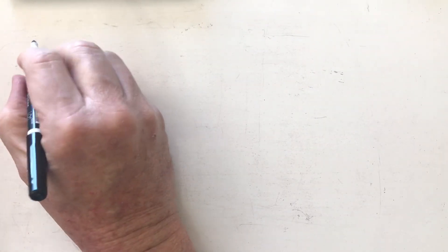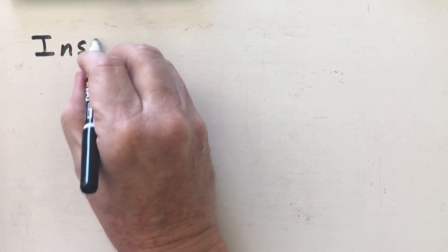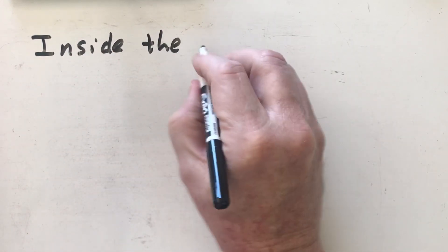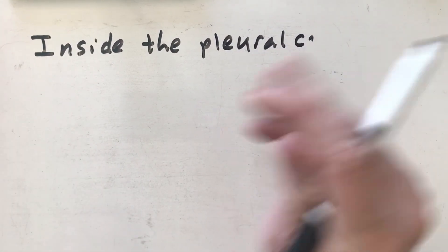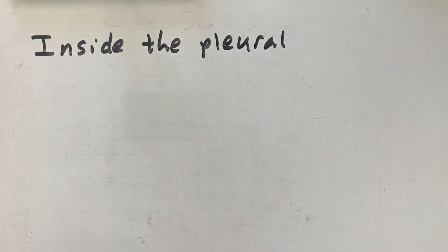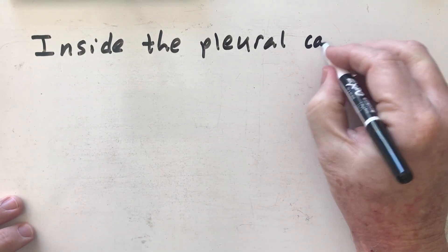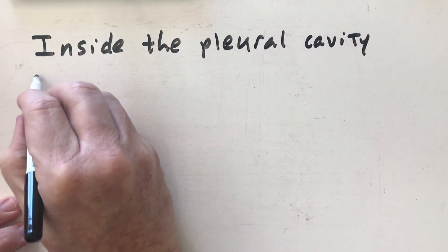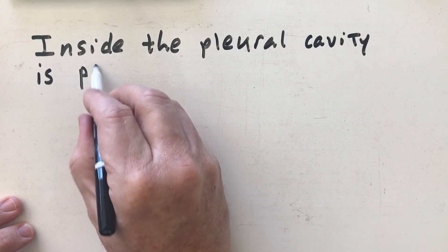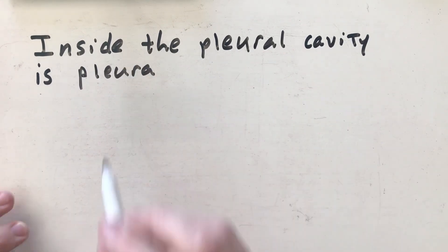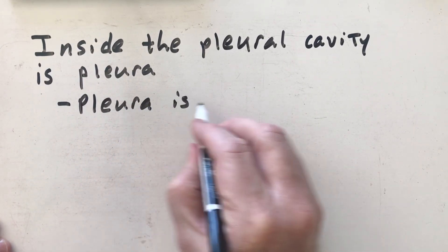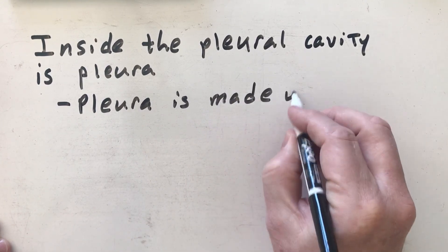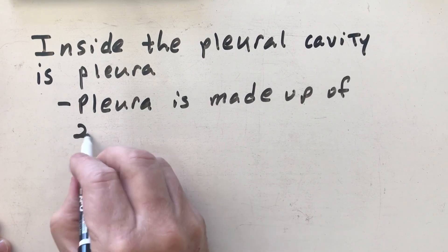Let's take a look inside the pleural cavity. I'm just going to say pleural cavity even though you have one around the right and left lung. Inside the pleural cavity is something called pleura. Pleura is made up of two membranes.